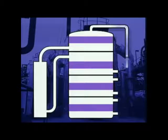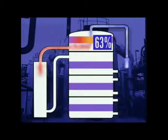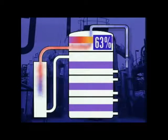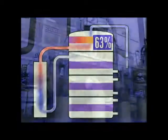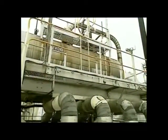The first catalyst bed converts about 63% of the sulphur dioxide to sulphur trioxide, and heat is produced. The gas stream is cooled before it passes to the next catalyst bed. Hot gas superheats steam from the furnace boiler.